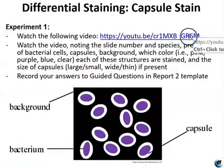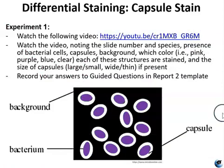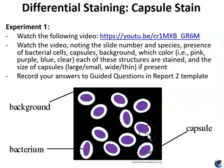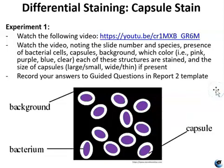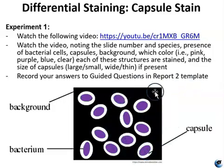You will watch a video to practice identifying and differentiating structures in capsule-stained slides. Make sure you can point out the bacterial cell itself, the capsule surrounding the cell, and the background — it's really important to differentiate those three things. Remember that sometimes the capsule may be so thin it's barely visible, even with the highest power objective and the fanciest light microscopes.